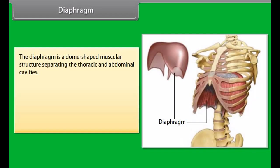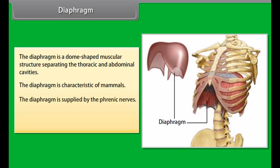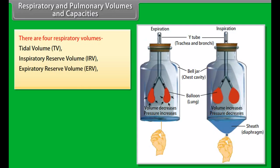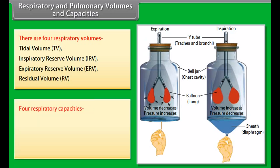The trachea, or windpipe, is a continuation of the larynx, supported by incomplete C-shaped rings of hyaline cartilage. The mucosa of the trachea is lined with ciliated pseudostratified epithelium containing mucus-secreting goblet cells, which help in pushing mucus out. A bronchus (plural: bronchi) is a passage of airway in the respiratory tract that conducts air into the lungs.